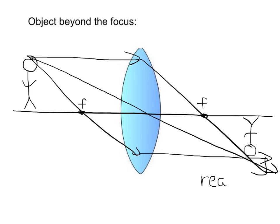Images like this we've seen before with mirrors. We call those real images, because there's really light there.